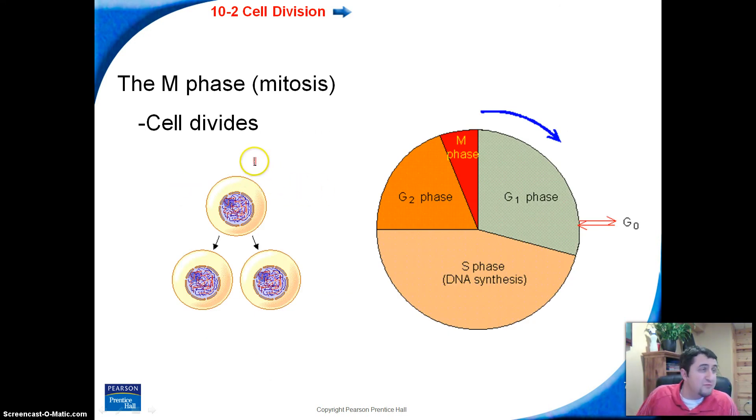And then finally, after G2, we are going to get the M phase. That's mitosis. That's where actually the cell divides. So if we have this cell right here, the parent cell, it's going to divide into two other cells in this phase right here, the M phase. It's a very small part of the cell cycle.